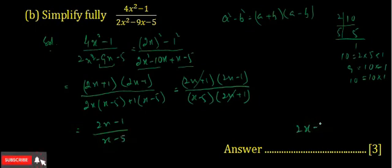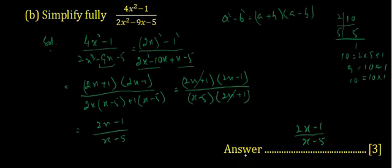The answer is 2x minus 1 divided by x minus 5. If you still have any problem, write in the comments and I will reply.